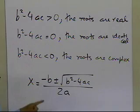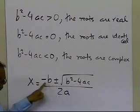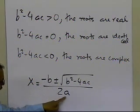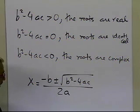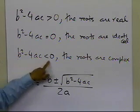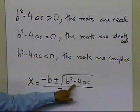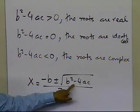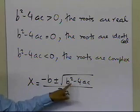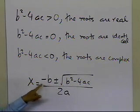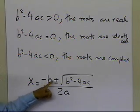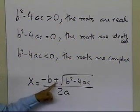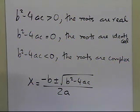If b squared minus 4ac is equal to 0, then this quantity is 0, so you have minus b divided by 2a as one root and minus b divided by 2a as the other root — the roots are identical, or what people might call repeated roots. If b squared minus 4ac is less than 0, this quantity becomes negative, so the square root of a negative quantity will be an imaginary number, giving you complex roots — specifically complex conjugates of each other, with plus and minus the imaginary number in each root.